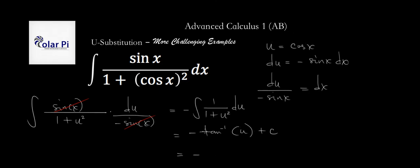And so, I'll replace u with cosine, and write negative arctan of cosine of x plus c. Keep watching.